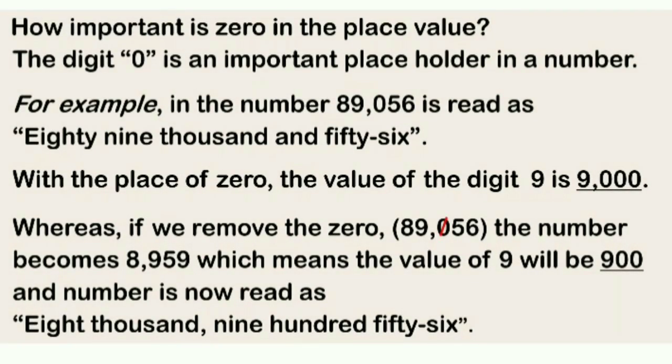How important is 0 in the place value? For example, the symbol 89,056 is read as 89,056 in words. With the place of 0, the value of the digit 9 is 9,000. Whereas, if we remove the 0, the number becomes 8,956, which means the value of 9 will now be 900. And the number is now read as 8,956. That's a lot different.